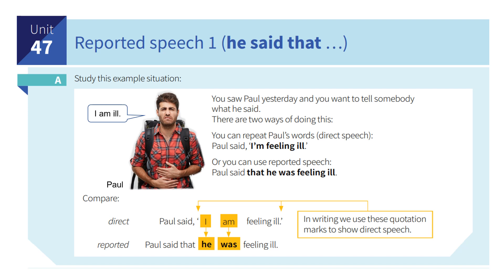Study this example situation. You saw Paul yesterday and you want to tell somebody what he said. There are two ways of doing this. You can repeat Paul's words — direct speech: Paul said, 'I am feeling ill.' Or you can use reported speech: Paul said that he was feeling ill.